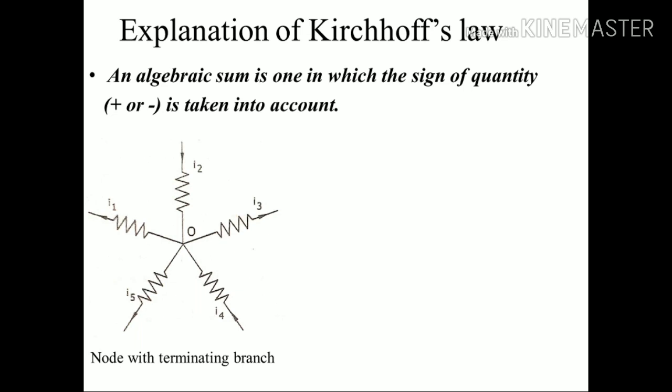Let us assign the current moving towards point O as positive sign and assign negative sign to the current moving away from point O. So our equation from the statement is minus I1 plus I2 minus I3 plus I4 minus I5 equals zero, because I1, I3, and I5 are moving away from point O, therefore they are assigned negative sign, and I2 and I4 are moving towards point O, therefore they are assigned positive sign.